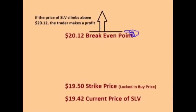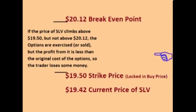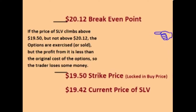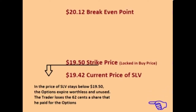If the price of SLV climbs above $20.12 within the next 6 weeks, the trader makes a profit. If the price of SLV climbs above $19.50 but not up to $20.12, the trader loses money — the option is sold for less than the original $0.62 paid up front. If the price of SLV stays below $19.50, the option expires unused and the trader loses the full $0.62 paid up front.